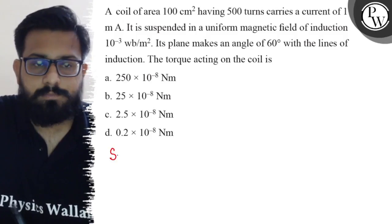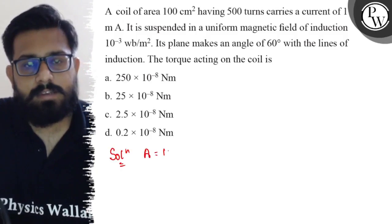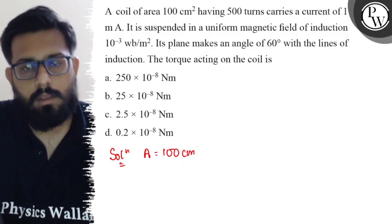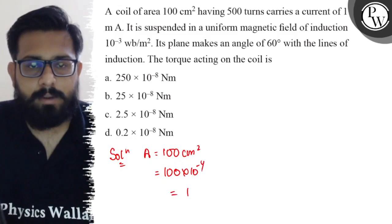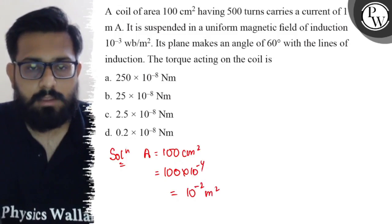So here in this question, you have the area as 100 cm². If you convert it to meters, it comes out to be 100×10^-4, which can be written as 10^-2 meter squared. This is the area.